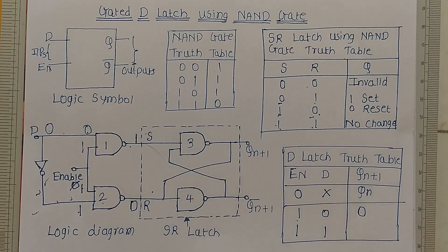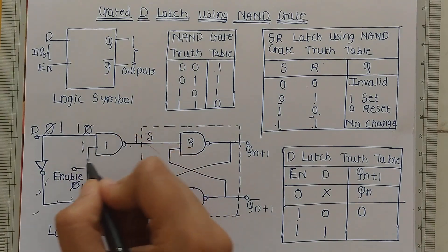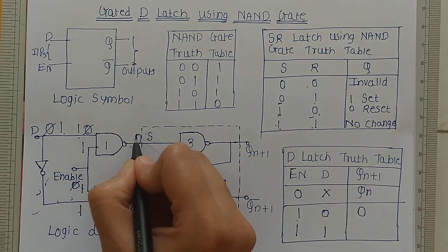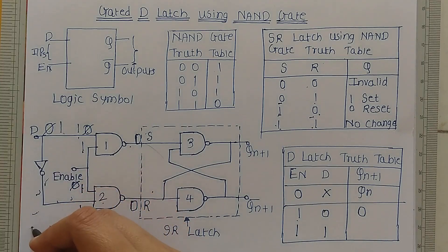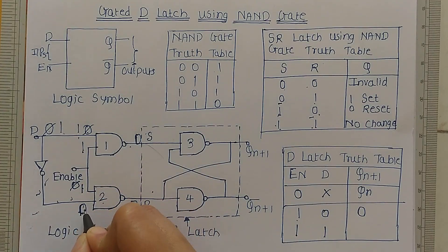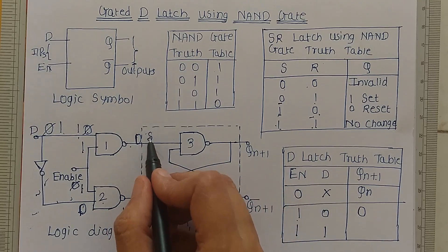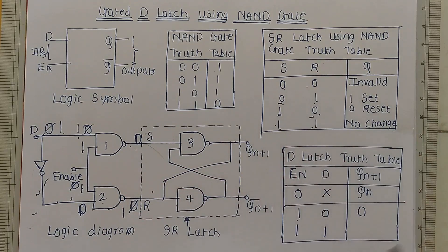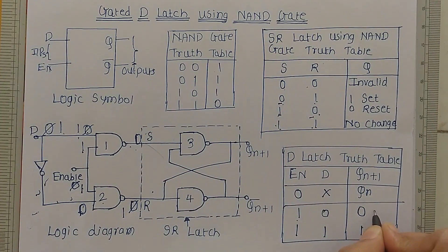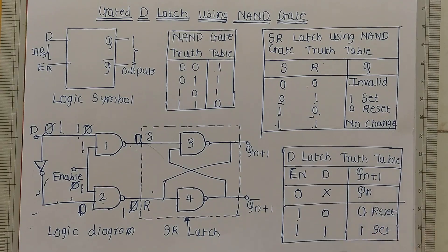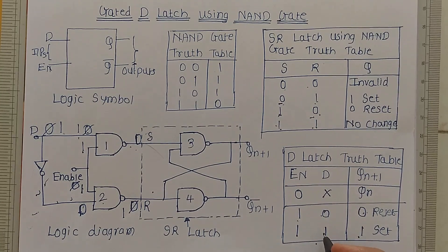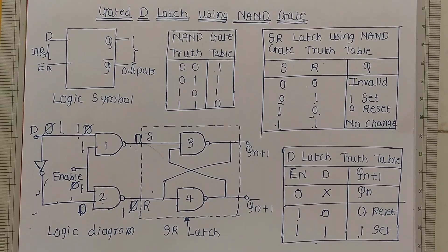Now the next input condition is D equals one with enable already one. When D is one, the first NAND gate gets one and one — one NAND one gives zero, so S equals zero. The inverted D becomes zero, so the second NAND gate gets zero and one — zero NAND one gives one, so R equals one. From the SR latch truth table, when S equals zero and R equals one, Q equals one — the latch is set. So when D is zero Q is zero, and when D is one Q is one: output Q follows input D when enable is one.